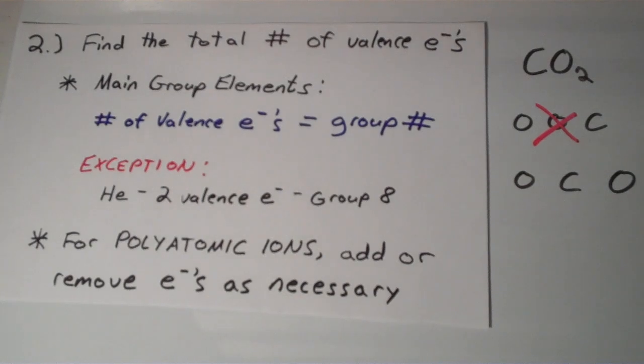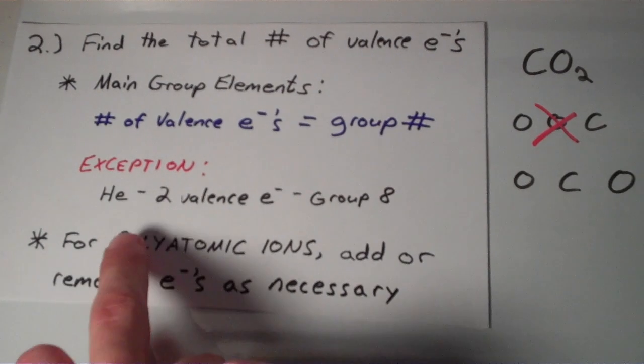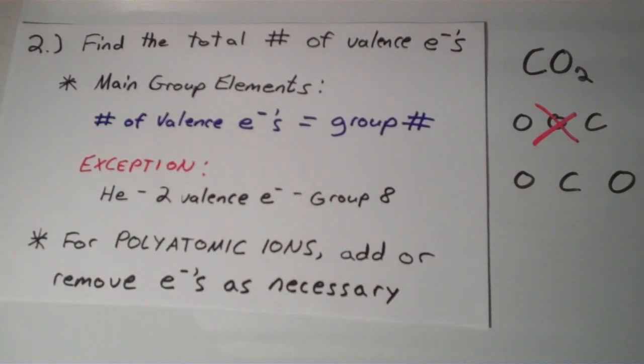So carbon in group 4 has 4 valence electrons. Oxygen in group 6 has 6 valence electrons. The only exception to this is helium, which has 2 valence electrons, and it's in group 8 with the noble gases. So just watch out for that.